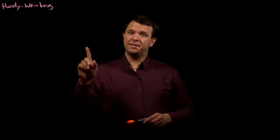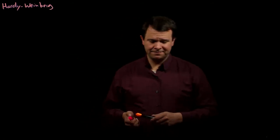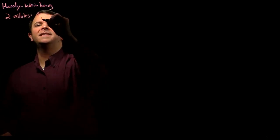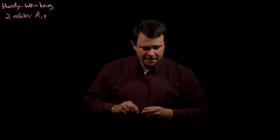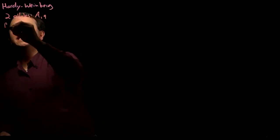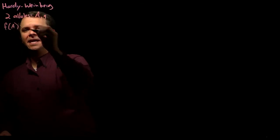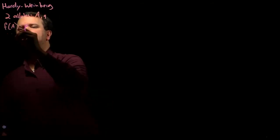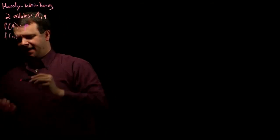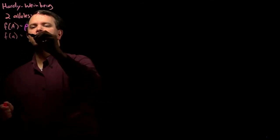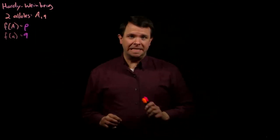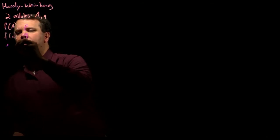The Hardy-Weinberg Principle is usually presented like this. If there are two alleles in a population of a gene or locus, let's say those alleles are big A and little a, then we write the frequency of one of those alleles, let's say big A, as P, and we write the frequency of the other allele, little a, as Q. And because these are frequencies, they must add up to one.